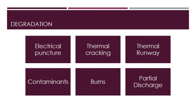Moisture ingress causes arrestors to operate in an unusual manner. Moisture can also cause overheating and leakage currents. The quantity of leakage current seen in a lightning arrestor indicates how much its health has deteriorated. A capacitive and resistive component makes up the overall leakage current. The resistive component is important since it contributes to the device's heating, and the level of power loss is directly influenced by leakage current, which decides whether the lightning arrestor can continue to operate without overheating. The quantity of internal current and the increase in temperature must be measured to calculate the useful life of a surge arrestor.